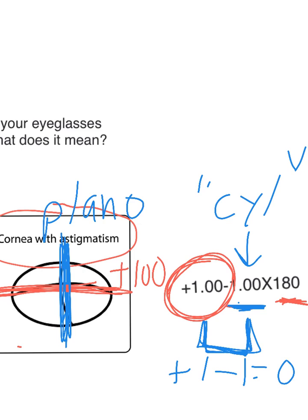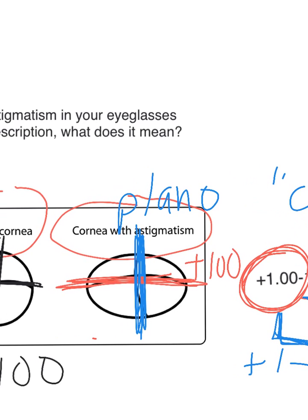So with the three numbers, it tells you everything. You get all the information about the astigmatism: the vertical meridian is plano and has a plano power, and the horizontal meridian has a plus one power.